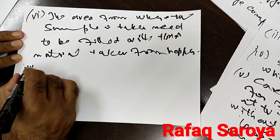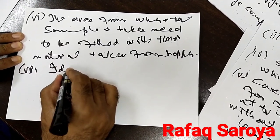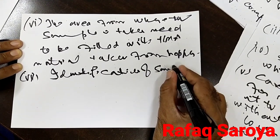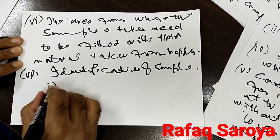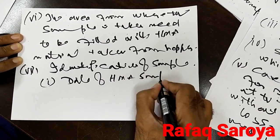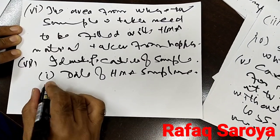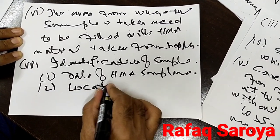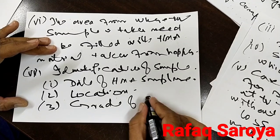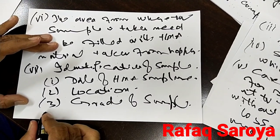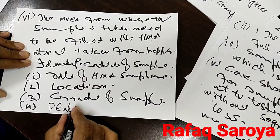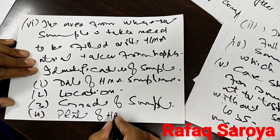Next is the identification of the sample. First, we will write the date of sampling, then we will write down the location, then we will write the grade of the sample, and last we will write down the plant of manufacture of HMA.